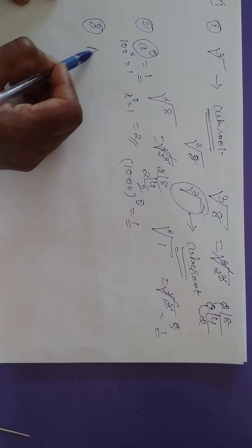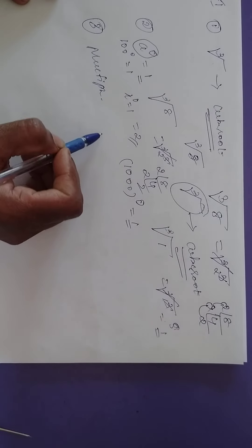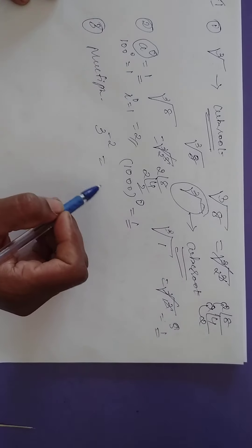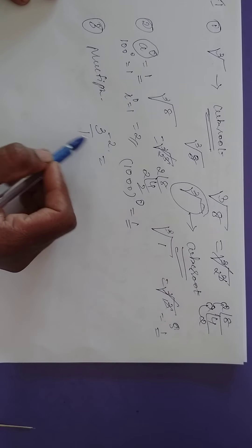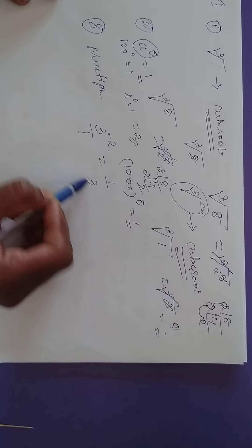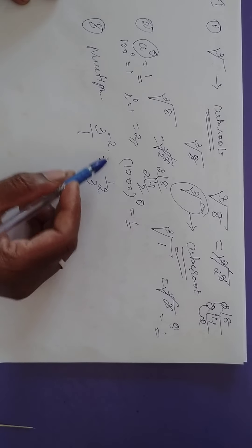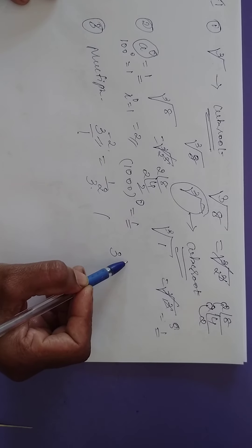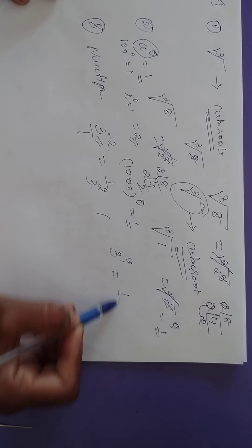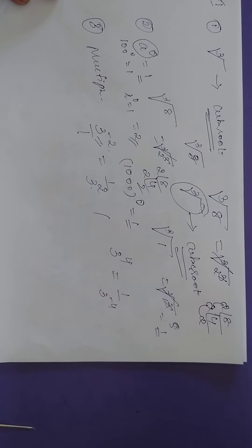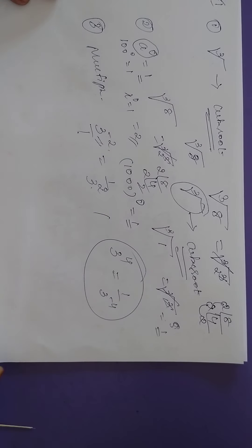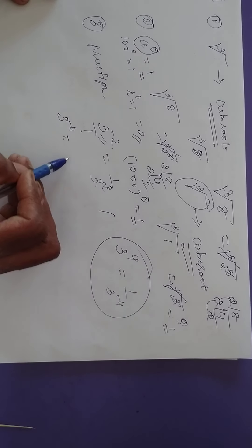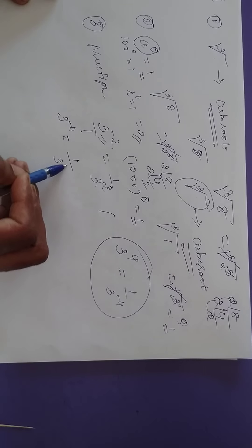I am talking about multiplicative inverse. Multiplicative inverse of, for example, 3 to the power of minus 2: how to write this? It is 3 power minus 2 by 1, so we can write this as 1 by 3 to the power of plus 2. When written in the denominator, it becomes plus 2. Multiplicative inverse of 3 to the power of 4 equals 1 by 3 to the power of minus 4. If you want to write in terms of positive value, it is 1 by 3 to the power of 4.